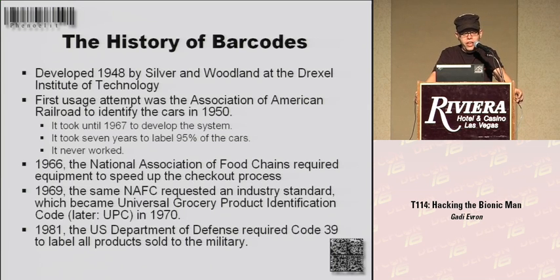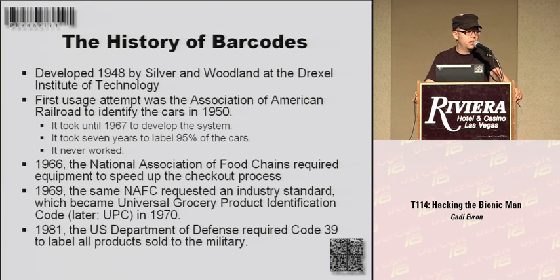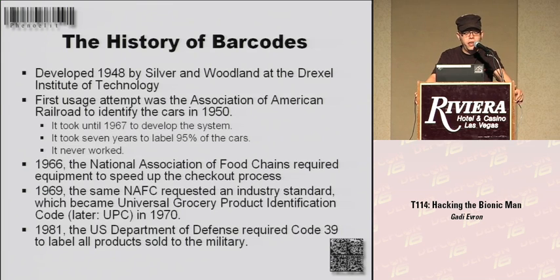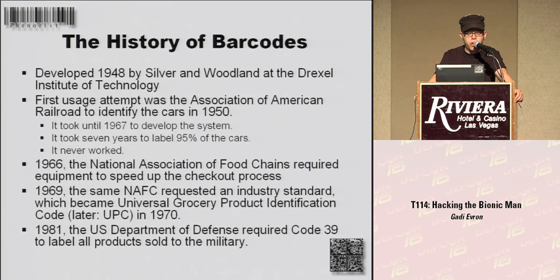However, in 1966, the National Association of Food Chains started to require having barcodes on products to speed up the checkout process so they could make more money. And that usually tends to be a really good driver for technology — either making more money or porn. In 1969, they requested an industry standard, which later became the UPC code you all have on your grocery products here in the States. And since 1981, the US Department of Defense required a Code 39 barcode on all products sold to the military. And you will see why that is a bad idea.